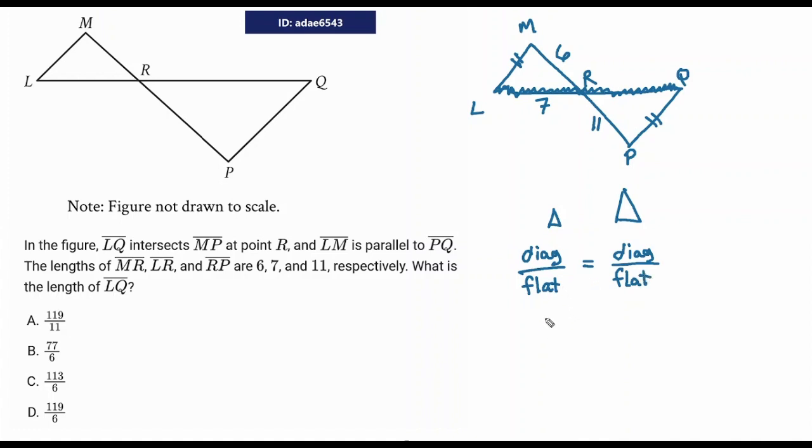So what are the real numbers here? What's the diagonal number in the small triangle? It's 6. And what's the flat number? 7. What's the diagonal number in the big triangle? It's 11. And what's the flat number? Don't know.